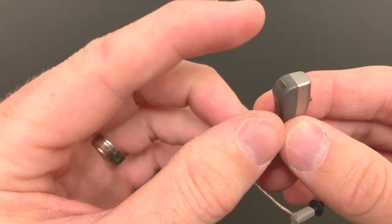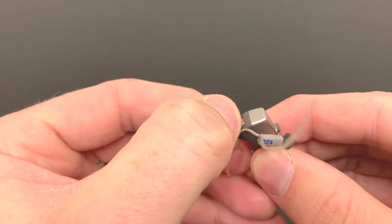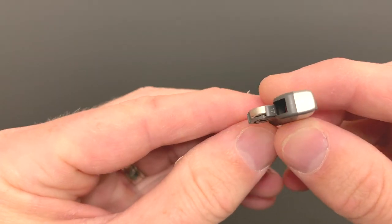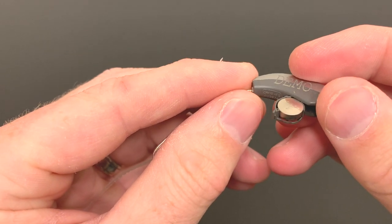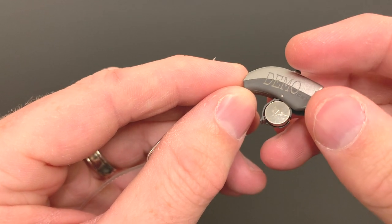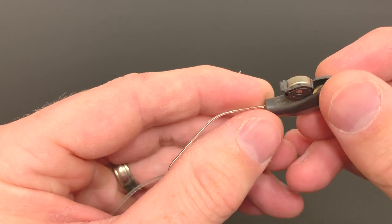On the bottom of the hearing aid is the battery door. Most have a little notch here that you can grab and pull open and you'll see your battery right there. The battery in most of these hearing aids only goes in one direction. You always want to make sure the hearing aid battery is placed in the hearing aid correctly. So that is where your hearing aid battery goes.